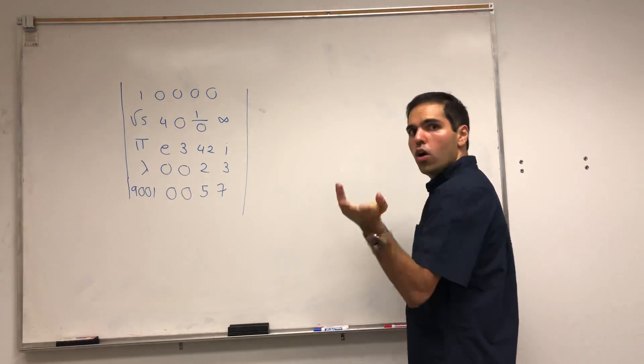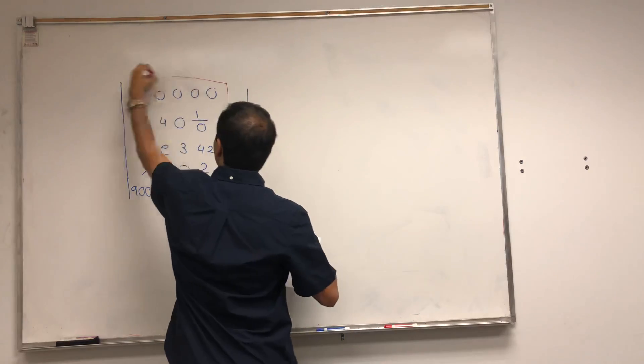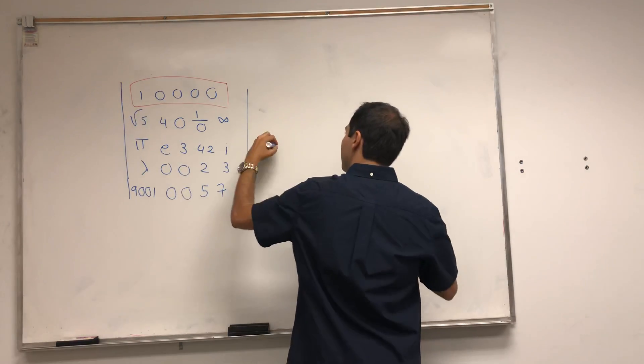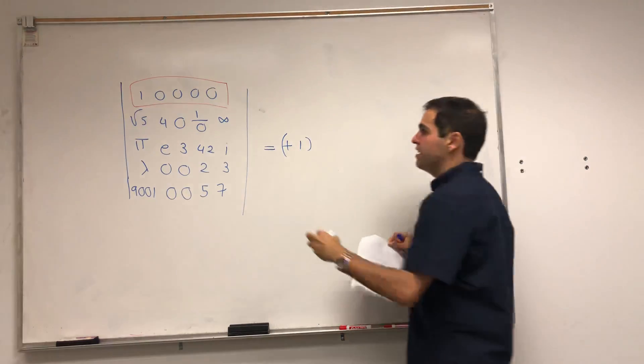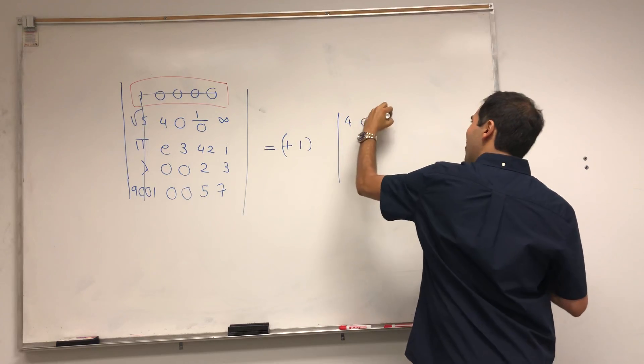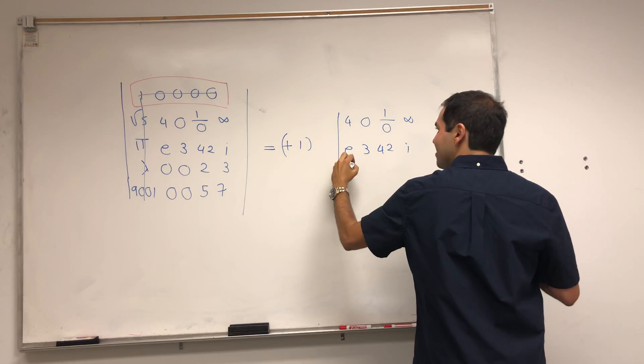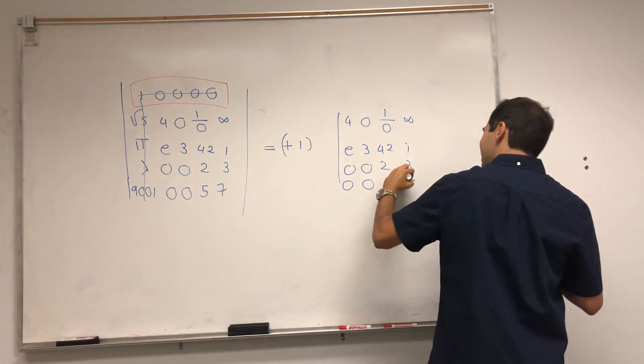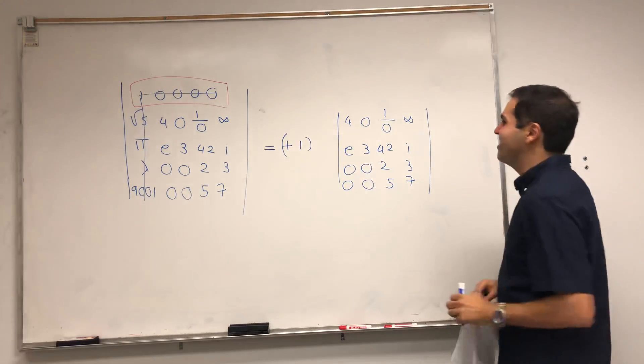So let's choose the row or column with lots of zeros, which, for example, you can choose this row. And so again, you start with a plus. So plus one times the determinant of the rest, which here is four, zero, one over zero, infinity. E, three, 42, i, zero, zero, two, three, zero, zero, five, seven. All right. So the lambda disappeared and 9001 disappeared, you know. So that's good.